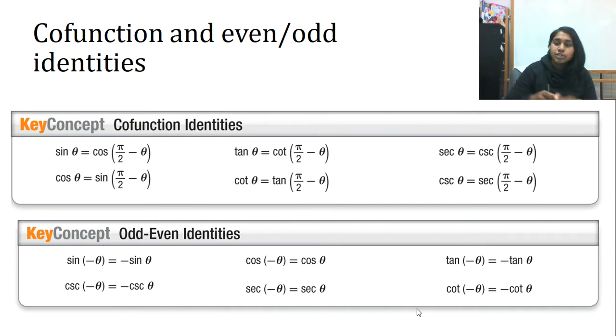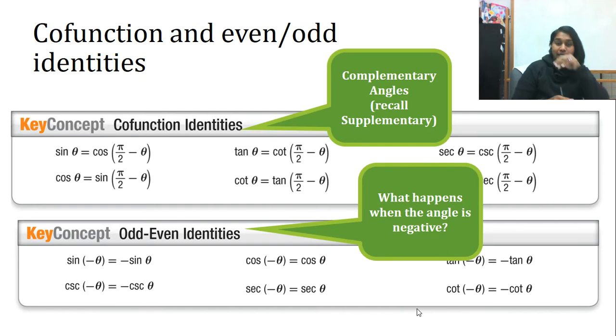Why are they relevant? Really, what the cofunction identity is, is they are the complementary angles.